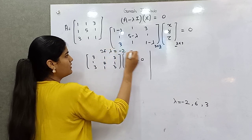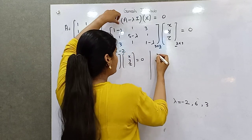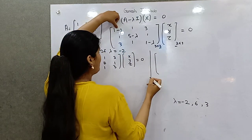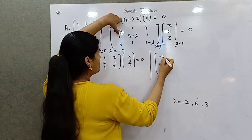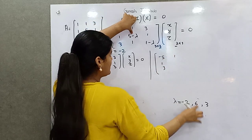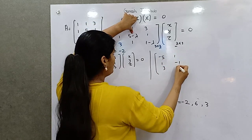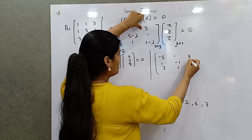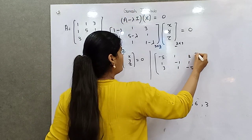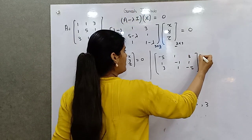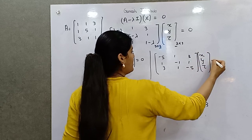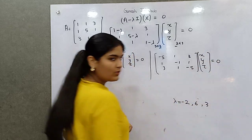That was for lambda = -2. Now put lambda = 6: 1 minus 6 is minus 5, 5 minus 6 is minus 1, 1 minus 6 is minus 5. So the matrix row entries become -5, -1, -5, giving x, y, z = 0.